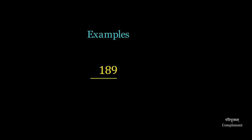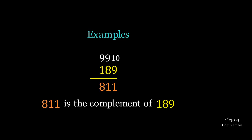For 189, we put 10 above the last digit, 9, and 9 above the other digits. 9 minus 1 is 8, 9 minus 8 is 1, and 10 minus 9 is 1 again. So 811 is the complement of 189.